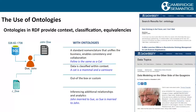I can also do inferencing — if I know that John is married to Sue, I can infer that Sue is also married to John, and that will be relevant for analytics. Dataversity has great information on ontologies — if you do a search on Dataversity, there are great articles, including one just this week from Thomas Frizzendale on data modeling and creating knowledge graphs.